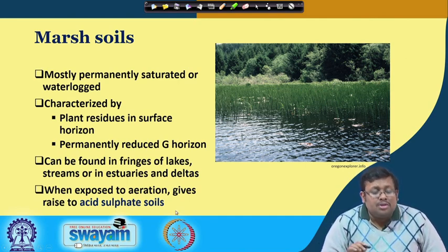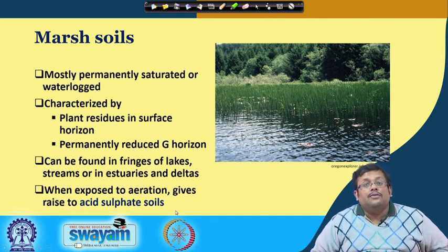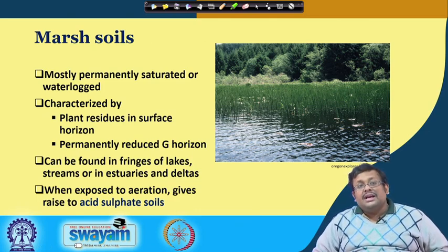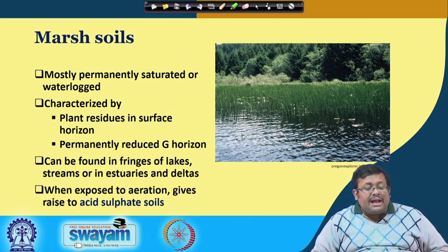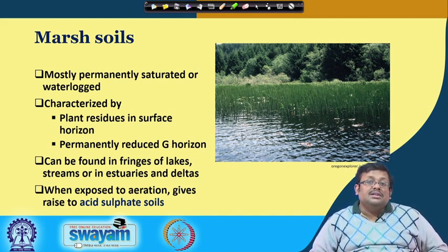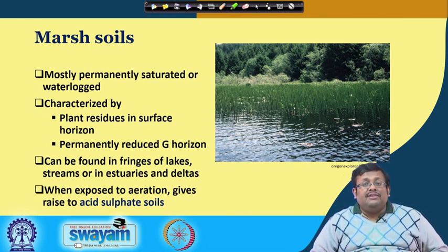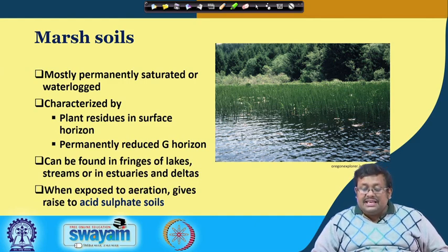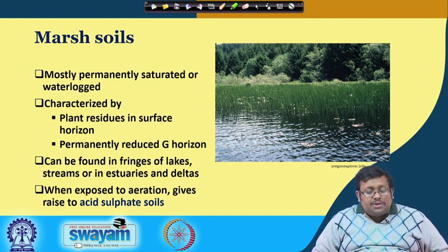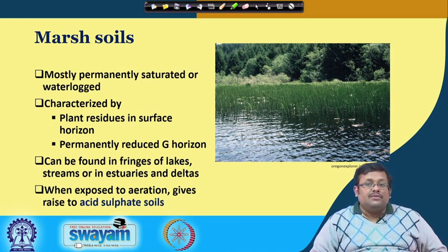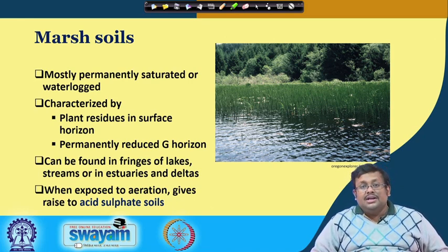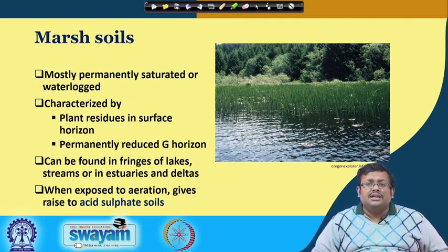Marsh soils are mostly permanently saturated or waterlogged, and are characterized by plant residues in the surface horizon and a permanently reduced glay horizon. They can be found in the fringes of lakes, streams, estuaries, or deltas. When exposed to aeration, marsh soils give rise to acid sulphate soils — which we discussed under soil acidity.